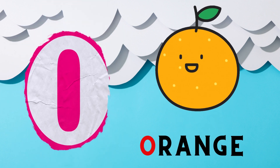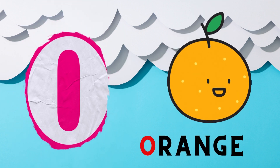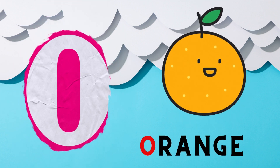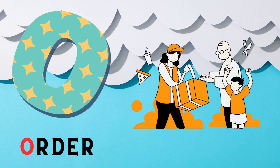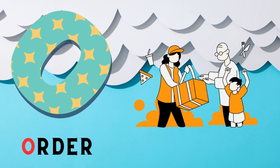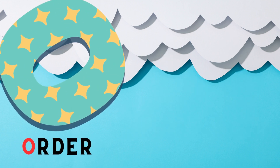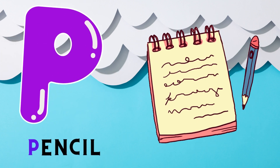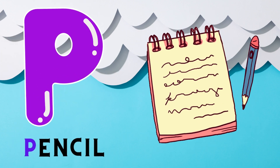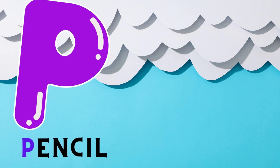O is for Orange. O, O, Orange. O is for Otter. O, O, Otter. P is for Pencil. P, P, Pencil.